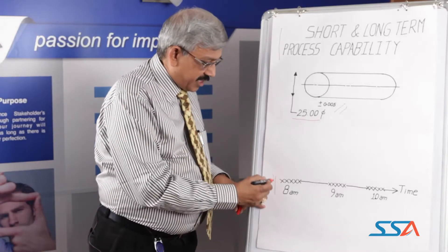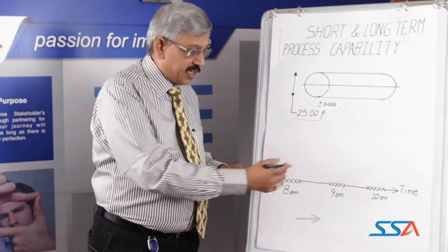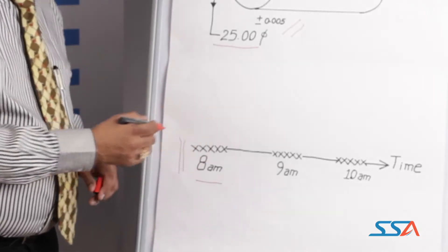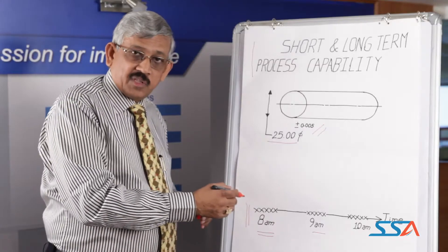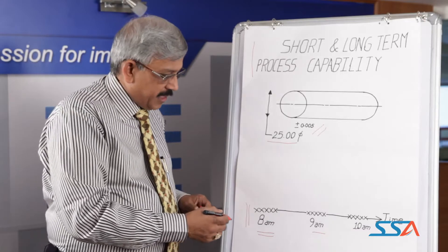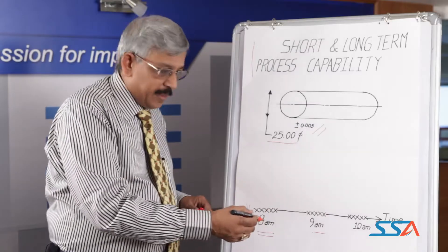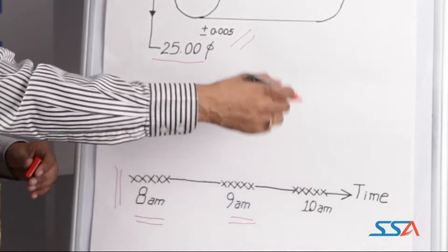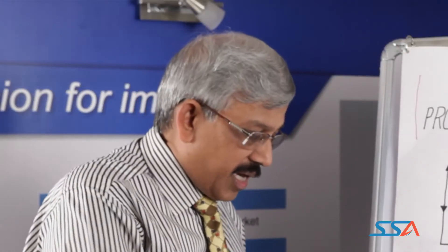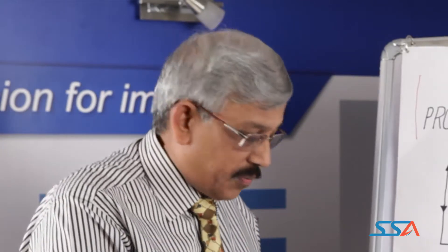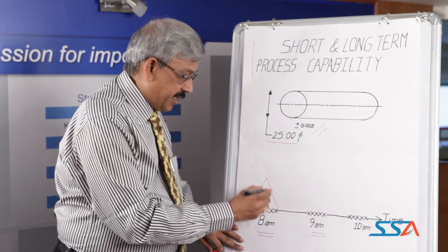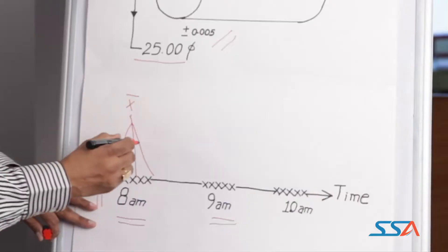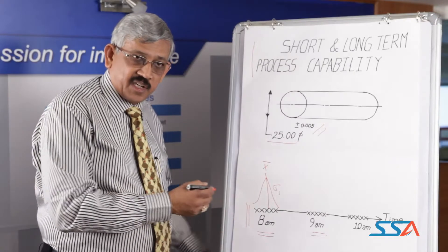We are going to take certain samples of this shaft at regular intervals of 1 hour. At 8 o'clock we go to the shaft floor and take about 5 samples. We call these 5 consecutive samples the subgroup samples. We then leave the production for about an hour. The subgroup at 8 o'clock has its own mean value and its own standard deviation sigma 1.